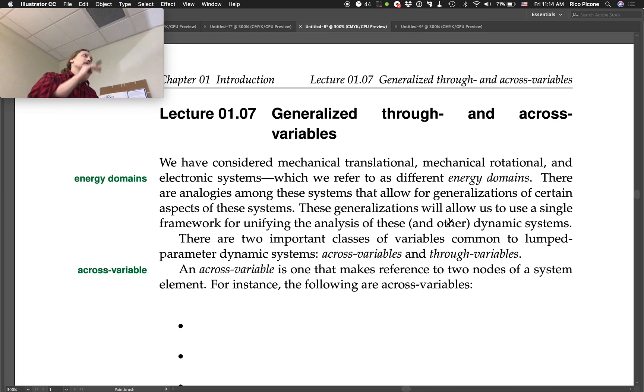So like voltage, velocity, current, and force, and all that. So we're going to generalize those first, and then we're going to generalize the elements. So we have considered mechanical translational, rotational, and electronic systems, which we refer to as different energy domains. There are analogies among these systems that allow for generalizations of certain aspects. These generalizations will allow us to use a single framework for unifying the analysis of these and other dynamic systems.